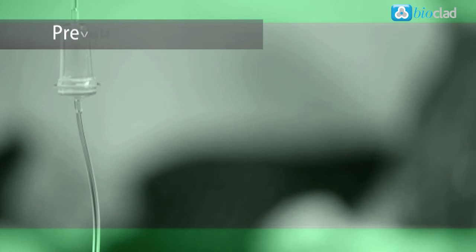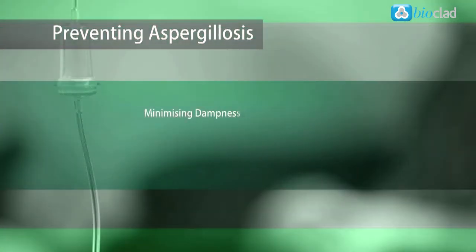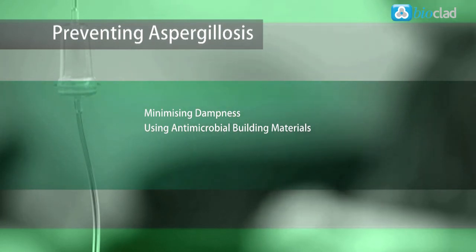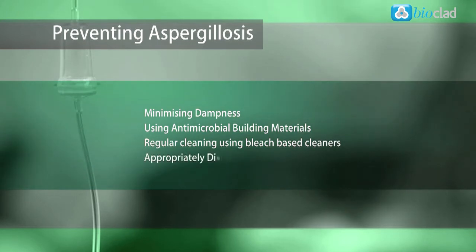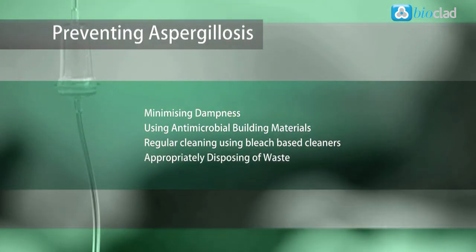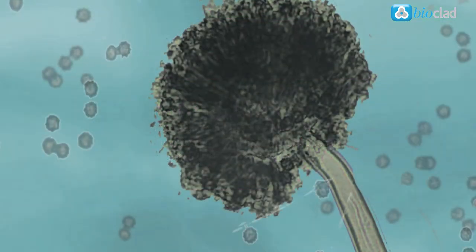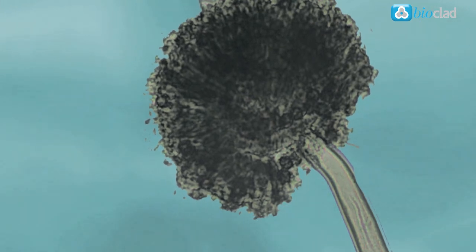Seeking to prevent the breakout by minimizing dampness and using antimicrobial building materials is key to reducing the outbreaks of aspergillus. Regular cleaning using bleach based cleaners and appropriately disposing of waste where aspergillus can grow should then minimize the inevitable growth from airborne spores.